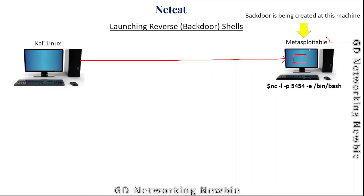To create the backdoor, we use the command: nc -l -p followed by the port number. This puts the machine into listening mode on that port. Then we use the execute option with /bin/bash, which provides the bash shell where we will be able to issue commands.